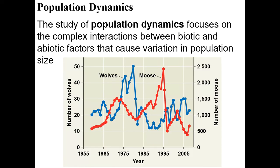Here are some predator-prey studies. On one axis you have number of wolves and on the other you have number of moose — note the different scales on each axis. At one line we're looking at 30 wolves versus 1,500 moose. In 1955 there were about 500 moose compared to 20 wolves. As the moose population goes up the wolf population goes down, and then as wolves increase the moose start to decline, suggesting these predator-prey relationships are linked.